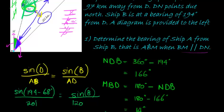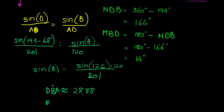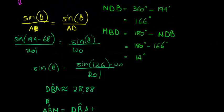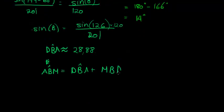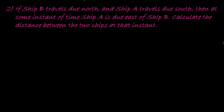So B is approximately equal to 28.88 degrees. But technically B is a bigger angle, so it's actually angle DBA — 28.88 degrees. So that was not the full question. We have to calculate ABM. Angle ABM is therefore equal to angle DBA plus the angle we calculated at the beginning, MBD, which gives me 28.88 plus 14, which equals 42.88 degrees.